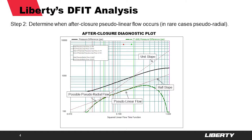In rare cases we may see possible pseudo-radial flow, but in unconventional reservoirs that are really low permeability, the pressure disturbance is typically a tight ribbon, so it's very rare to actually see pseudo-radial flow. Our analysis hinges mainly on the pseudo-linear flow.